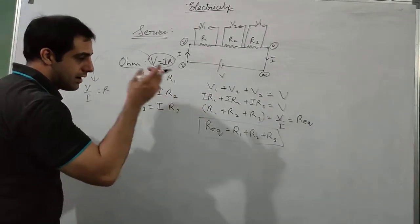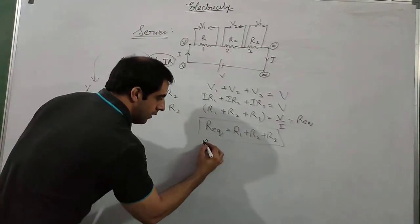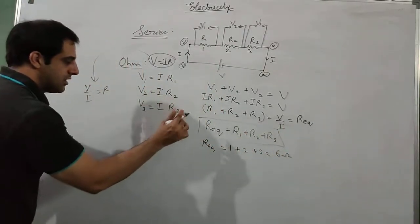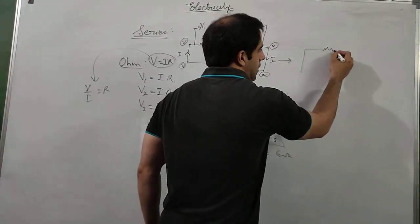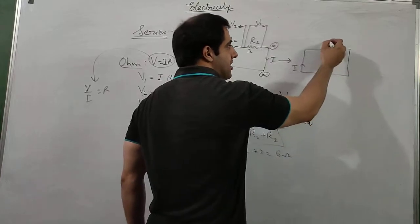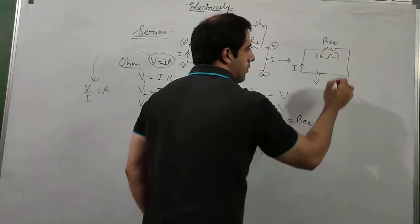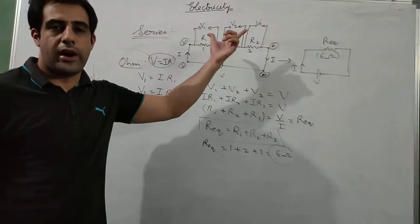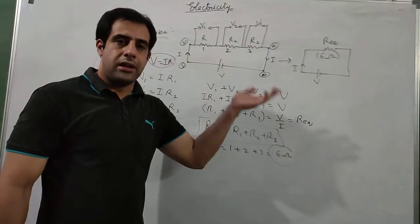Let us use this with a numerical example: 1 ohm, 2 ohm, and 3 ohm. R equivalent equals 1 plus 2 plus 3, which is 6 ohms. This means the circuit can be redrawn as a single resistor of 6 ohms connected to the battery V. These two circuits are equivalent — R equivalent is the value of R1, R2, and R3 grouped together. Remember this formula and this diagram for series combination.